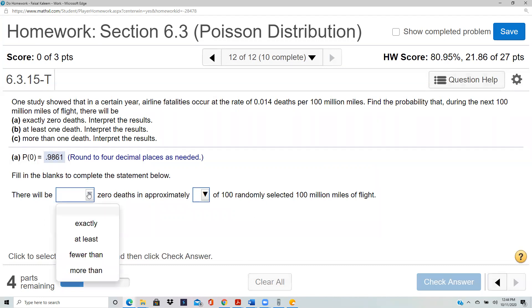So there will be - they are asking question about exactly zero deaths. This 'exactly' is part of the question, not part of the answer. Normally we don't ever select exact as an answer, but this is part of the question. There will be exactly zero deaths in approximately this many of hundred randomly selected hundred million flights. This was one sample of hundred million flights and you got 0.9861. If you select hundred of them, you would multiply 0.9861 by 100 and get 98.61, which is 99.